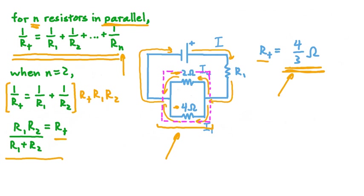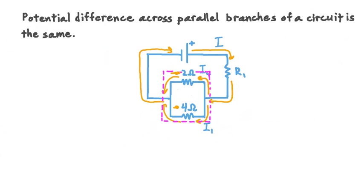That's really interesting because it means we can decrease an overall resistance by adding more resistors, as long as they have smaller and smaller values. So far we've talked about current and resistance in parallel circuits. Now let's talk about potential difference. The key point here is that the potential difference across parallel branches of a circuit is the same — so if we measured the potential difference across the upper branch, it would equal the potential difference across the lower branch.